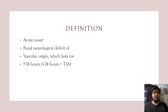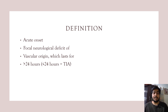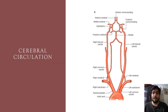By definition, stroke is an acute onset focal neurological deficit of vascular origin which lasts for more than 24 hours. If it is less than 24 hours then it is a TIA, or transient ischemic attack.